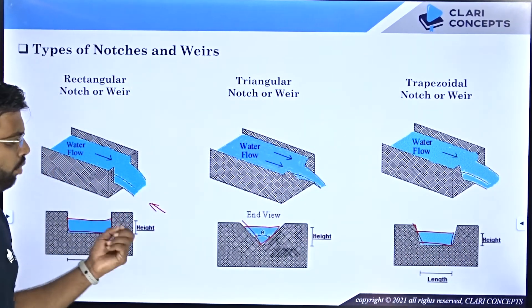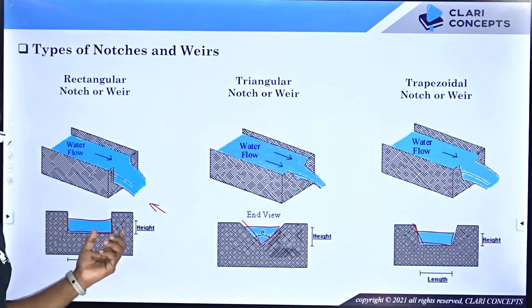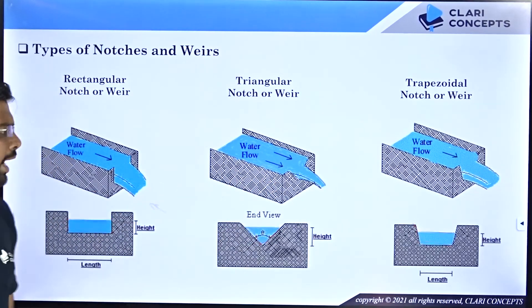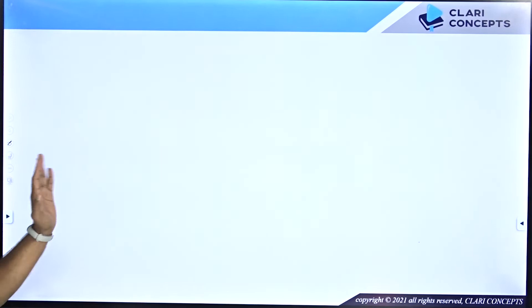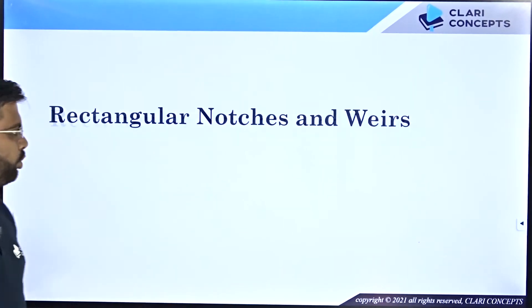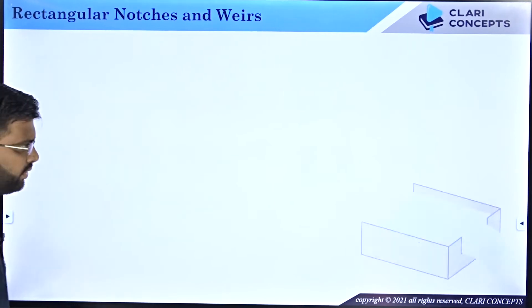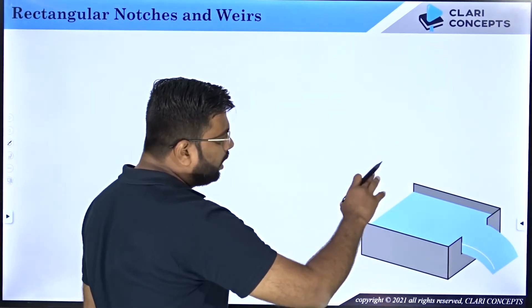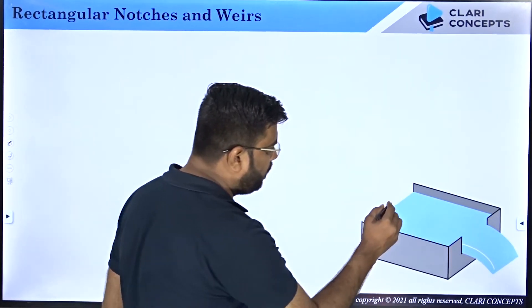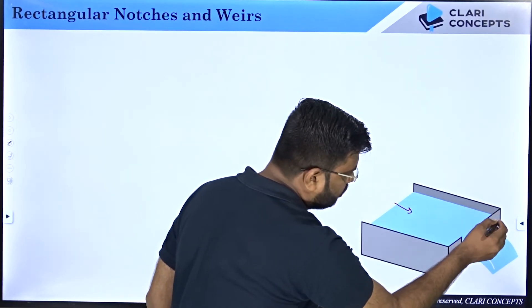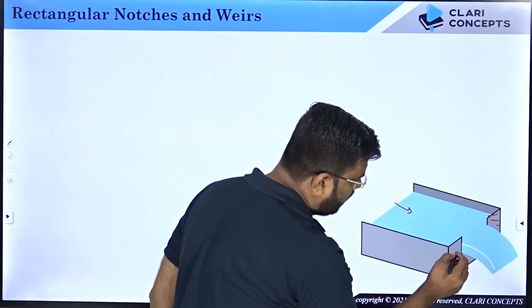We will see how to calculate flow rate using all three types of notches one by one. Today in this lecture, we are going to look at the first type — the rectangular notch and weir. A rectangular notch basically looks like this. Let's say I have an open water body, a canal where water is flowing from left to right, and this is my notch.